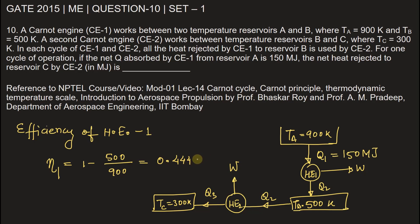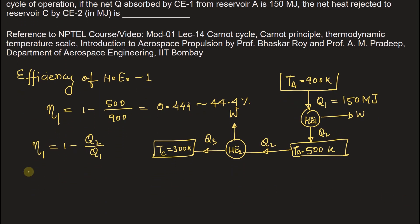Now we can also write the efficiency eta 1 is equal to 1 minus Q2 by Q1. The value of Q1 is already known and we have already got the value of eta 1 that is 0.444, so from here we get the value of Q2 will be equal to 83.33 megajoule.